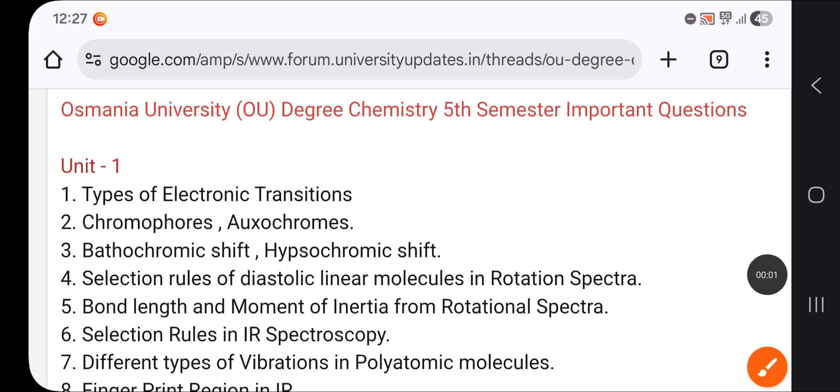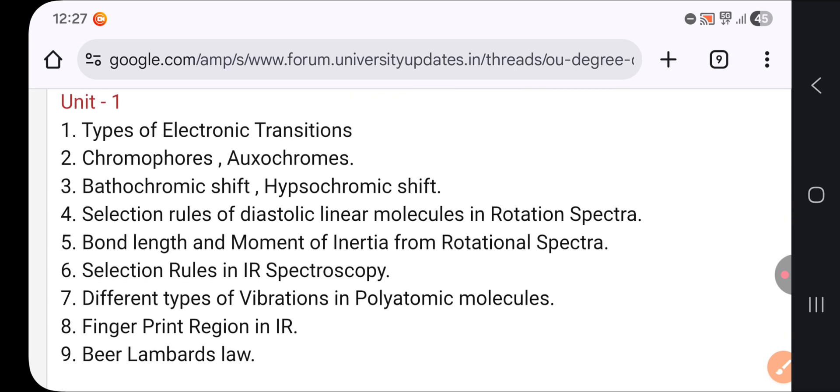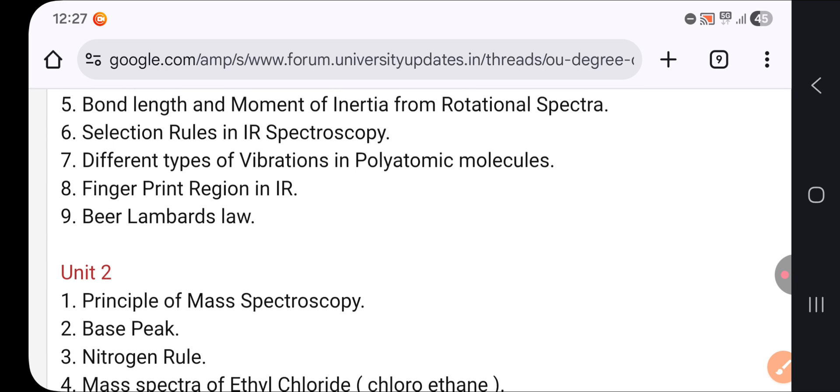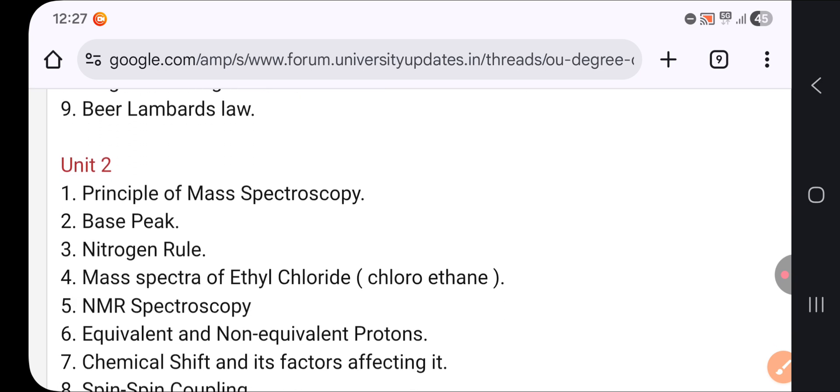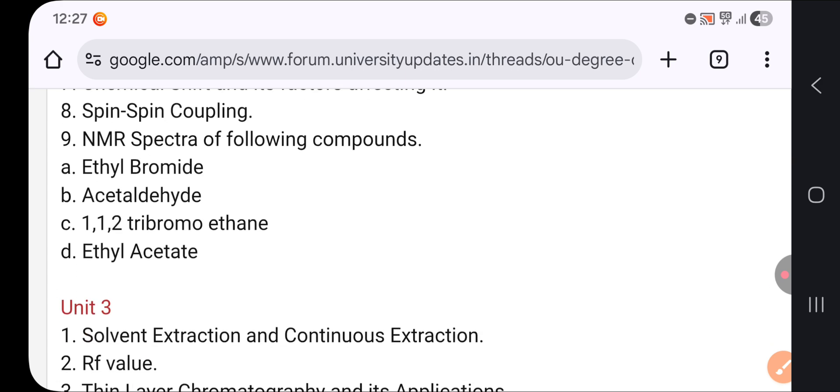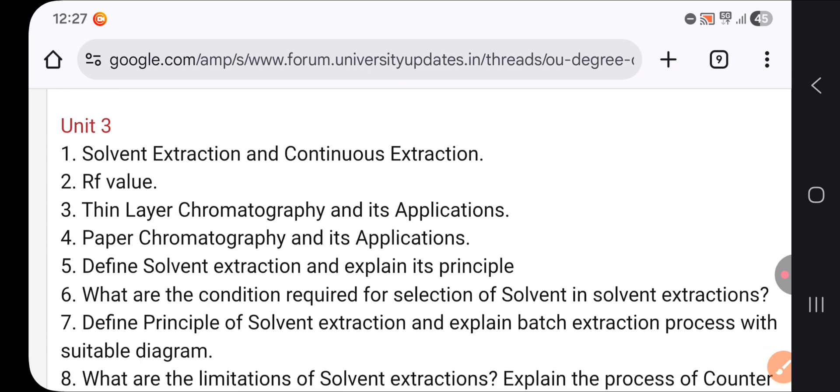Welcome back to our channel students. In this video, we are discussing the subject Chemistry BSc Fifth Semester under Osmania University. Unit-wise important questions, as you all see on the screen. These are important questions from the website. Prepare these questions for your final examinations so you can definitely score good marks.